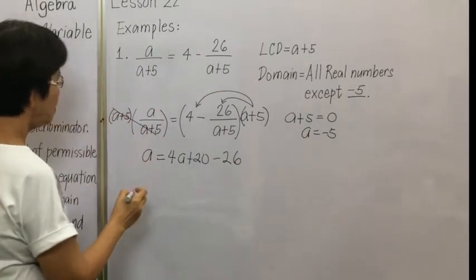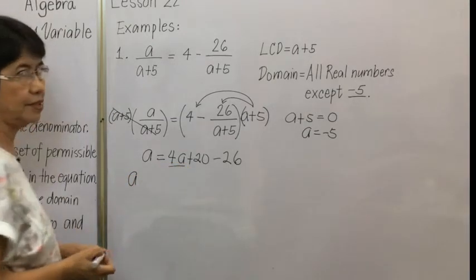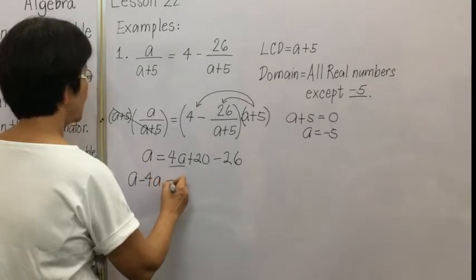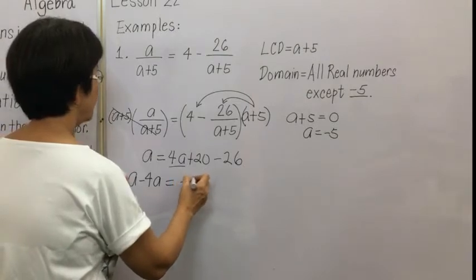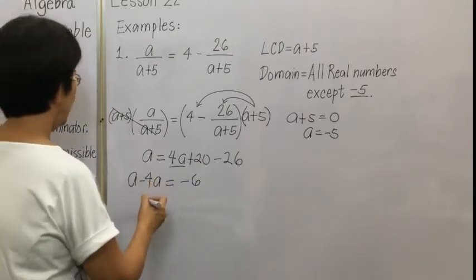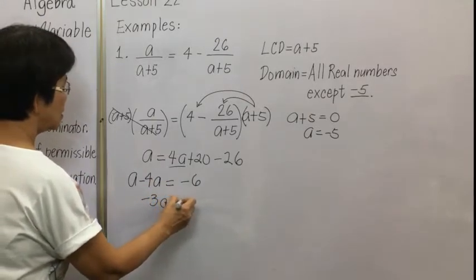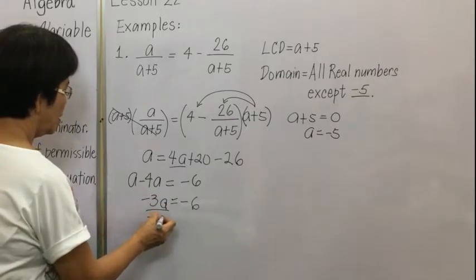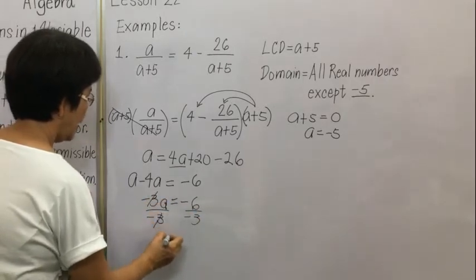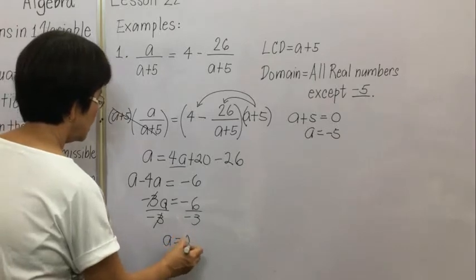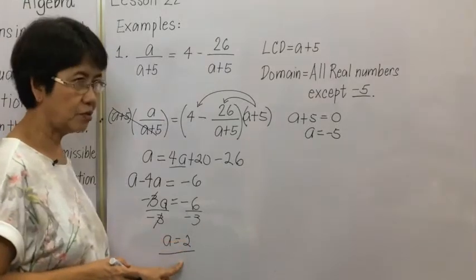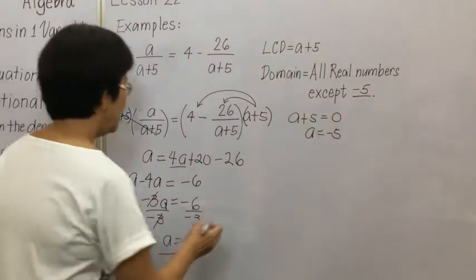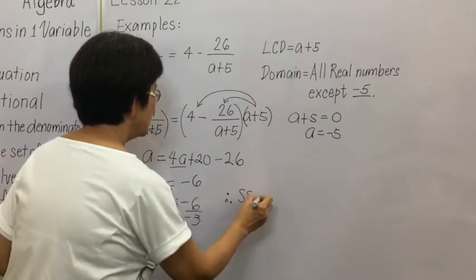Simplifying, we have a and 4a. Subtracting 4a from both sides gives negative 3a equals 20 minus 26, which is negative 6. Dividing both sides by negative 3 gives a equals positive 2. Check that this value is not an exception in the domain — it is not, so it is an acceptable solution. Therefore, the solution set is {2}.